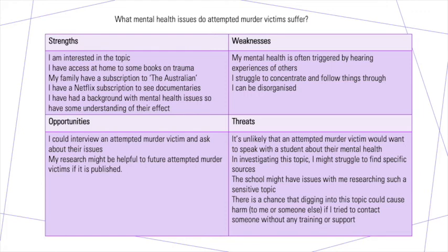Strengths: I'm interested in the topic — that is a strength. I have access at home to some books on trauma — anything you've got at home is generally a strength. My family has a subscription to The Australian. I have a Netflix subscription with access to relevant documentaries. I have a background with mental health issues, so I have some understanding of their effect — that's a strength too, as you understand how detrimental mental health issues can be.